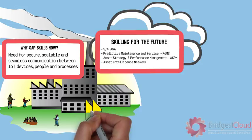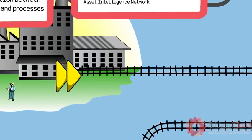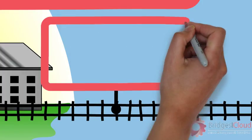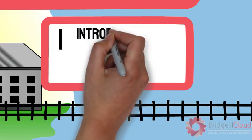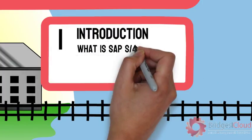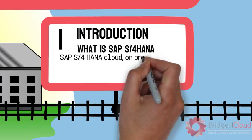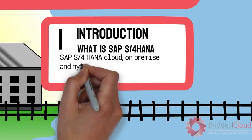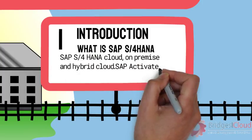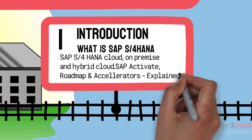And this is where our learning journey starts. The first module is all about introduction to S4HANA. Here we present foundational training on S4HANA Cloud, On-Premise, and Hybrid Cloud. We also look at new tools such as SAP Activate, Roadmap, and Game Changing Accelerators.